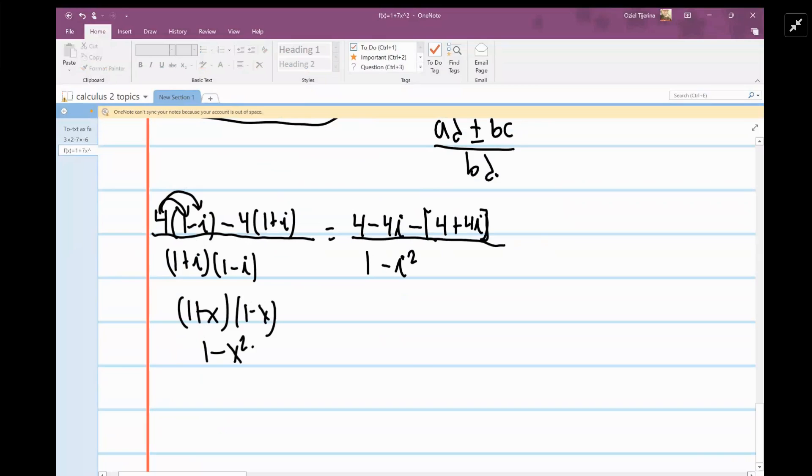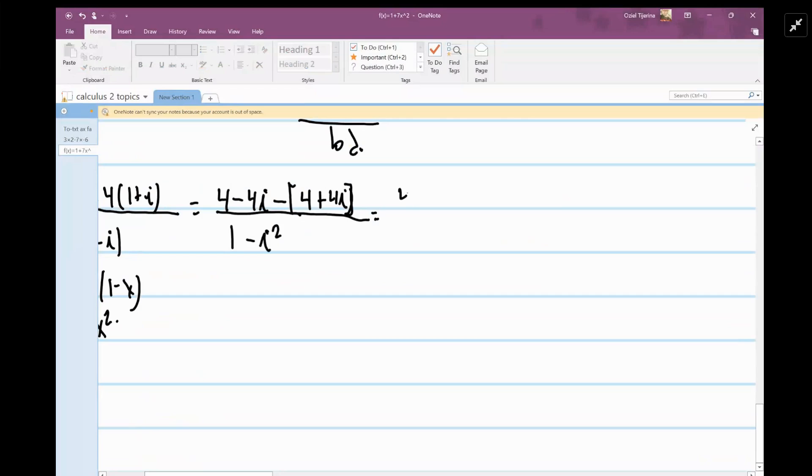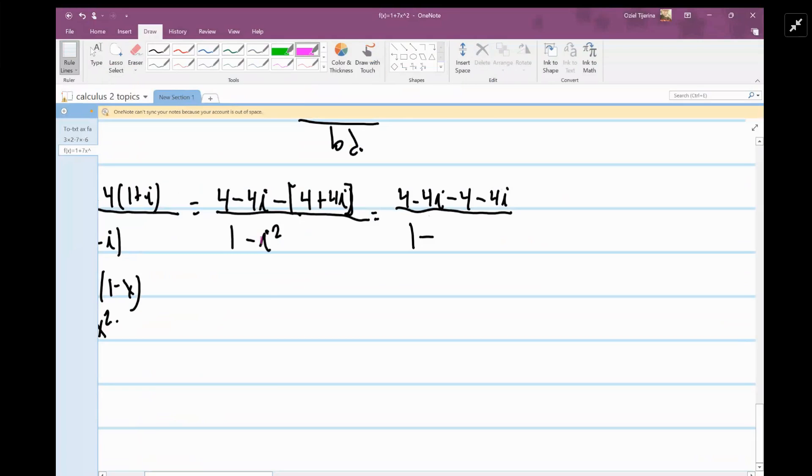Okay, so then you're going to say 4 minus 4i, so we're going to say 4 plus i times i squared minus 4i all over 1. And then you're going to say minus, and then the i squared, the i squared we know is negative 1, so you're going to say 1 minus negative 1.